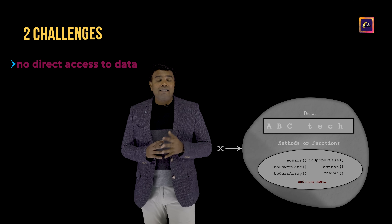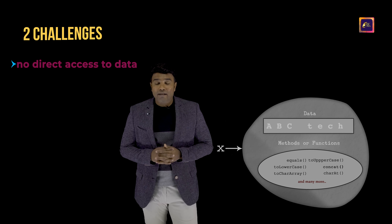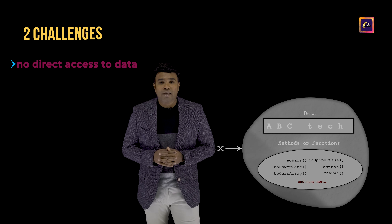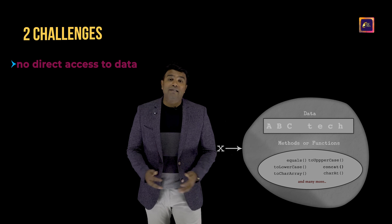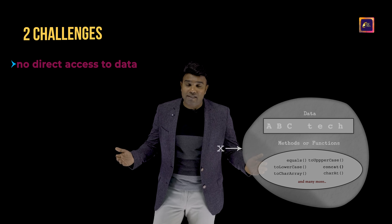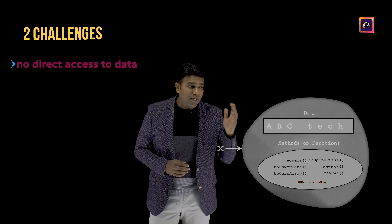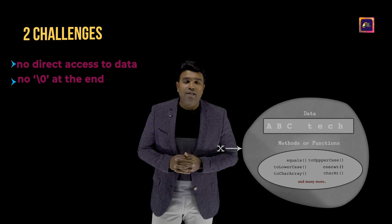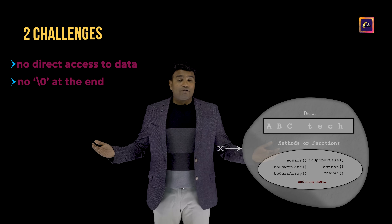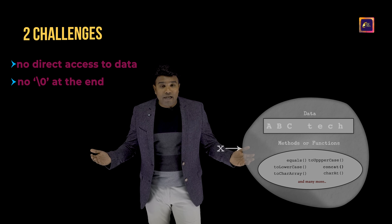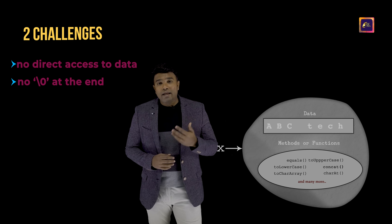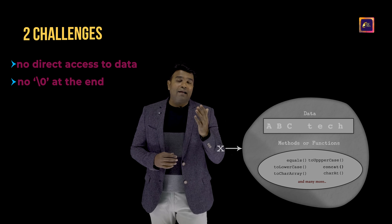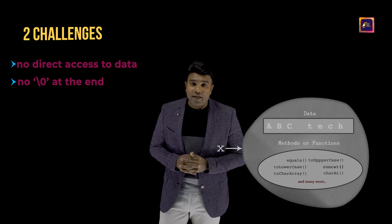When direct access is not there, how would I be able to count the number of characters present in the data? The second challenge is that, as you can see, the data is not ending with a null character. If the data is not ending with a null character, then how would I know where the data ends and when I have to stop my counting?